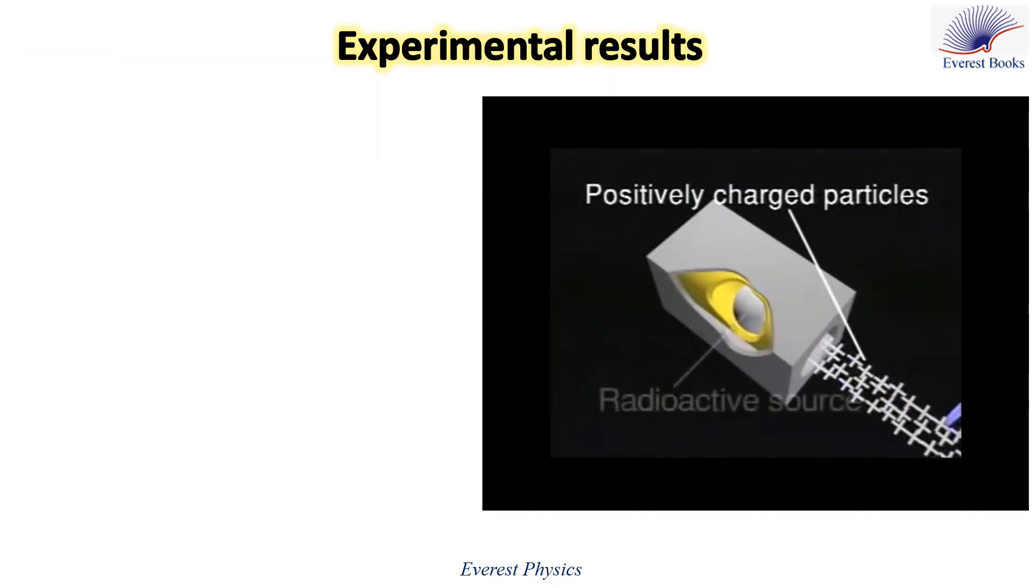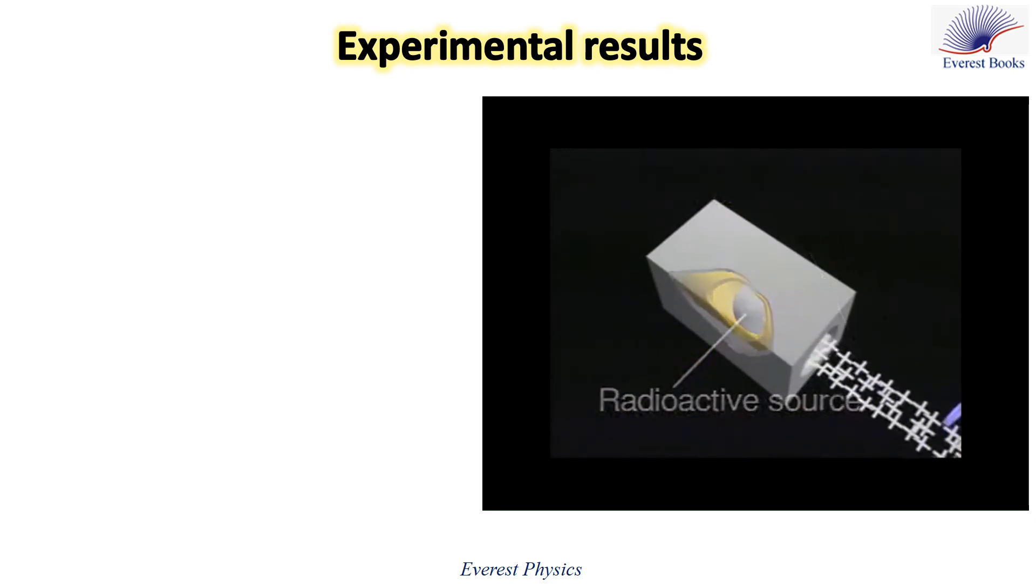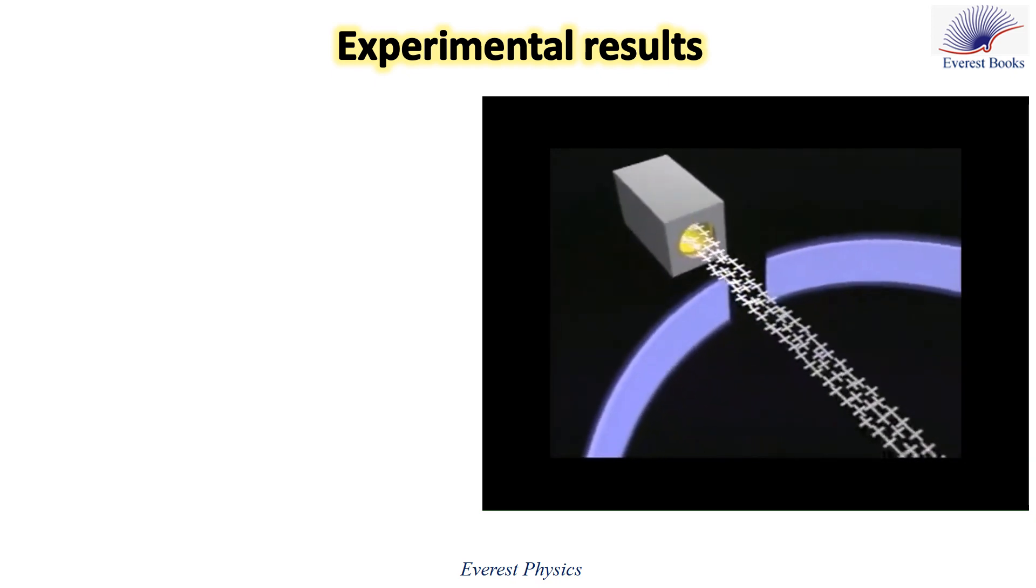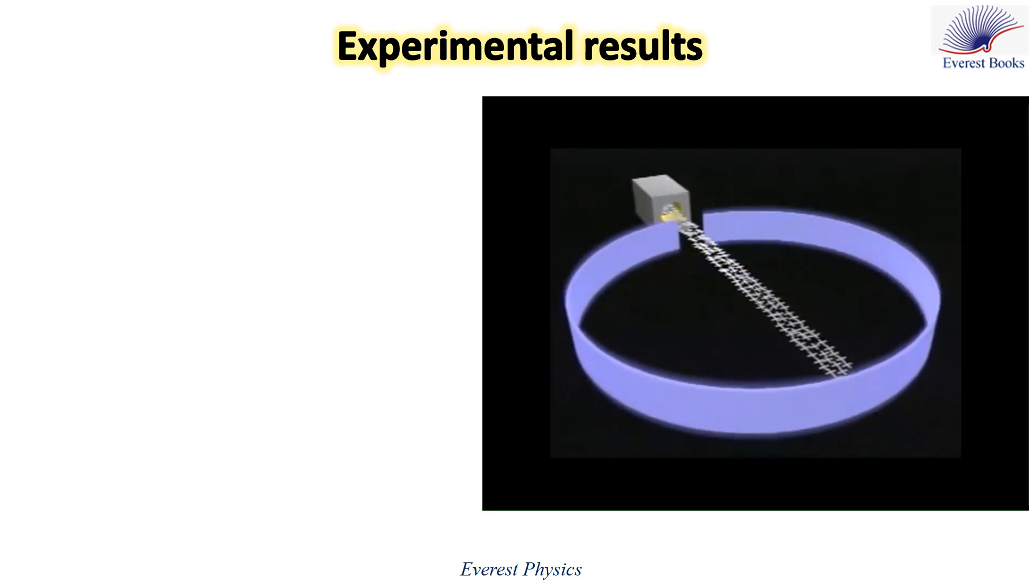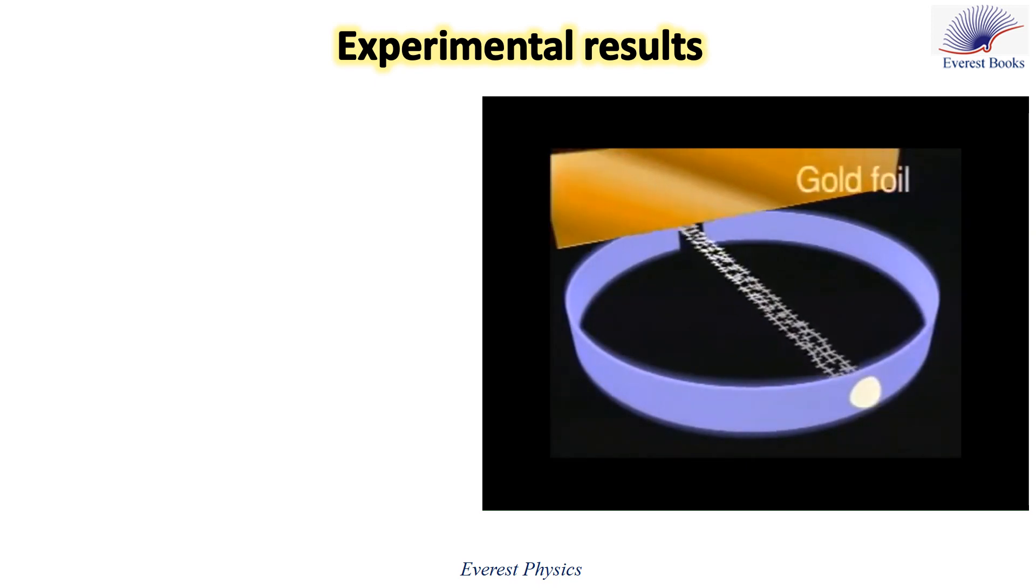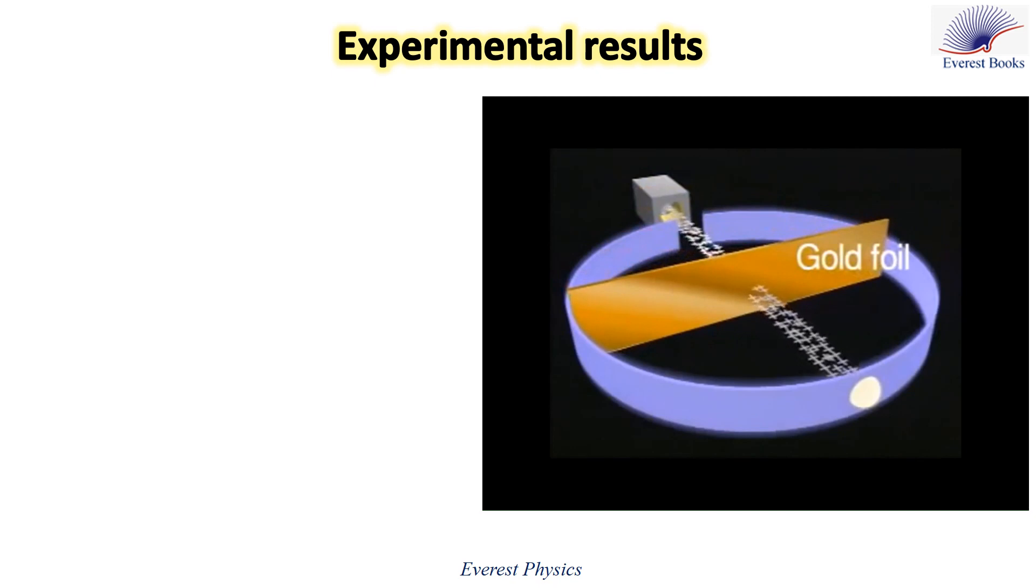This animation shows what actually happened in Rutherford's experiment. The beam of alpha particles was projected into a thin gold foil. A fluorescent screen detects the scattered alpha particles.